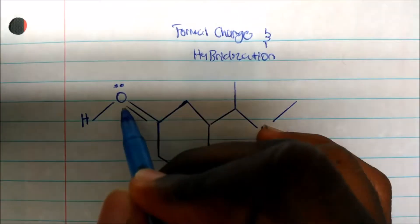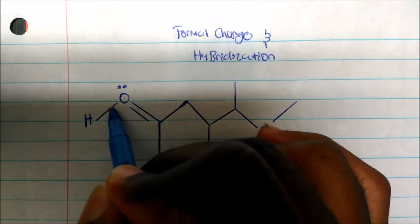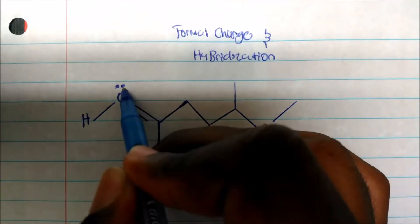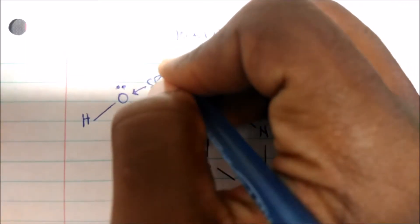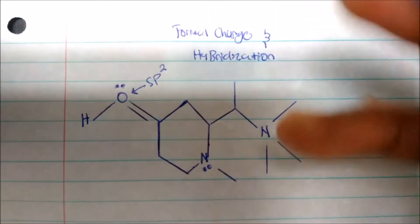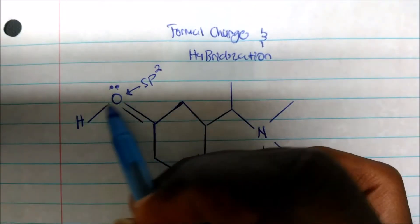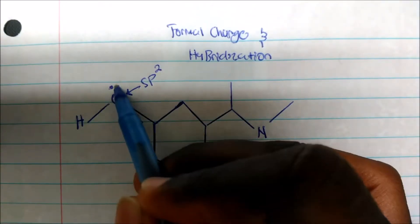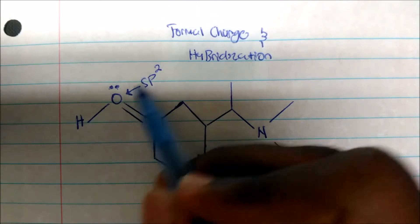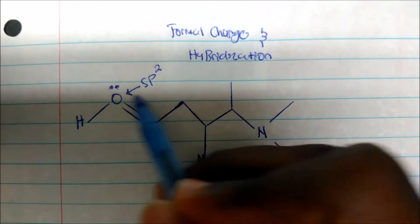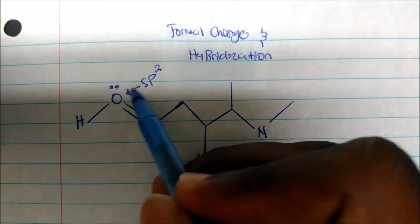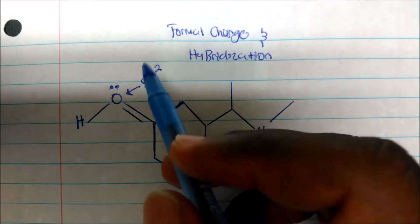Looking at this oxygen, there is one electron group, two, three. So this corresponds to sp2 hybridization because you have three electron groups. Your hybridization number should match up to how many electron groups are around your atom, or your steric number.